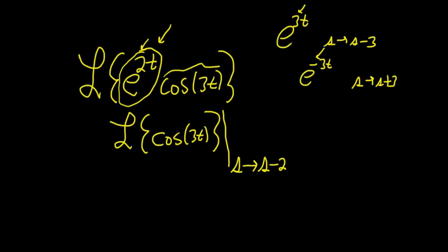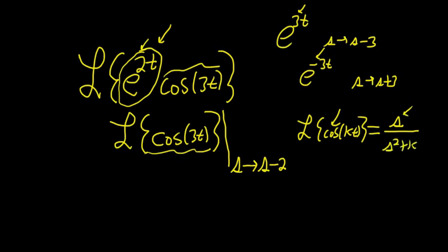Okay, now we have to find the Laplace of this thing here. Well, if you recall the Laplace transform of cosine kt, just remember cosine has the s. So it has an s. That's how I memorize it. So cosine has the s, and then it's s squared plus k squared. If it's sine, you have a k up here.